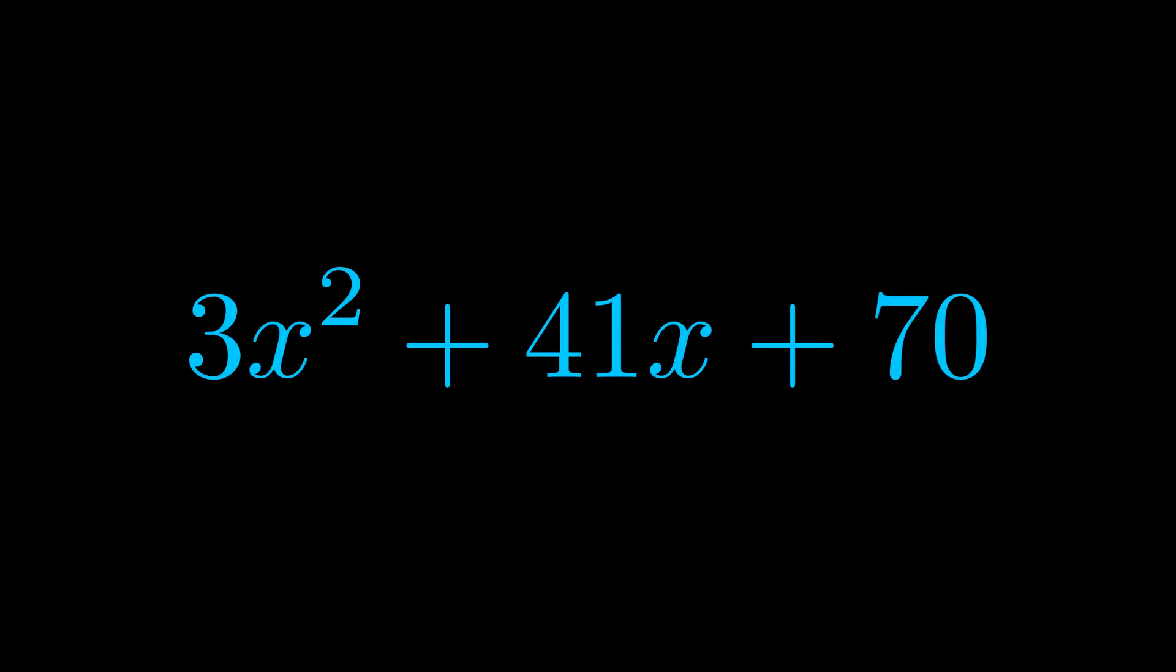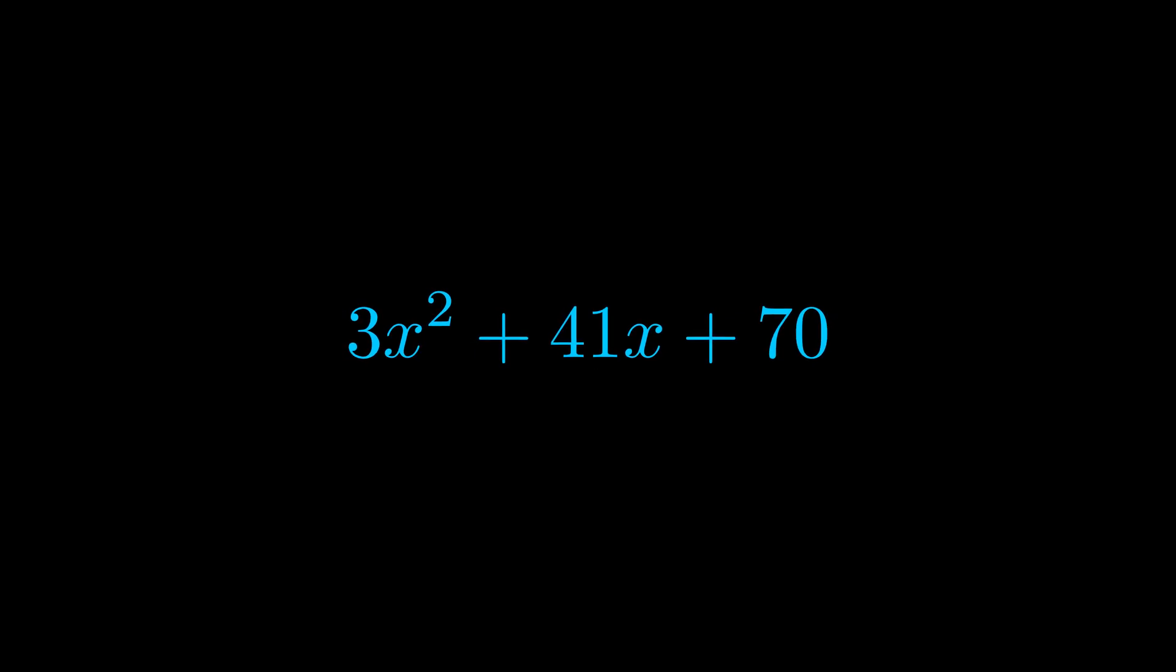Step one when factoring an equation of this form is to multiply the a value by the c value. Here we can see that our a value is the coefficient on the x squared term and our c value is the constant term.